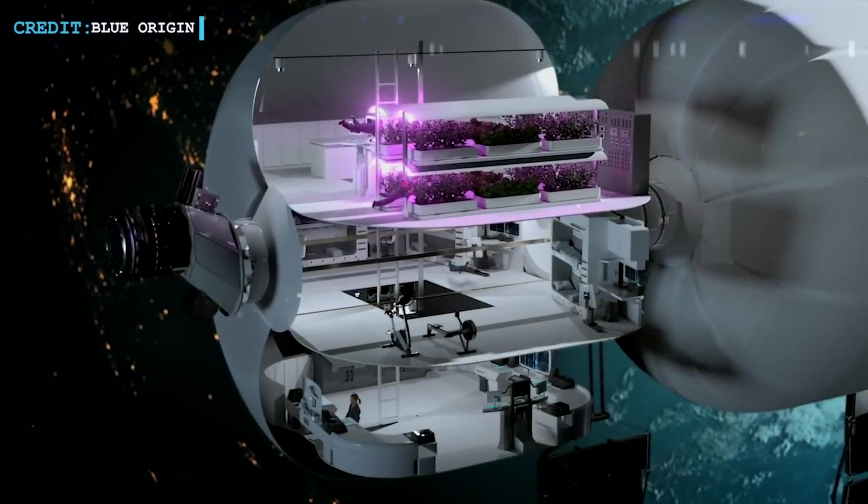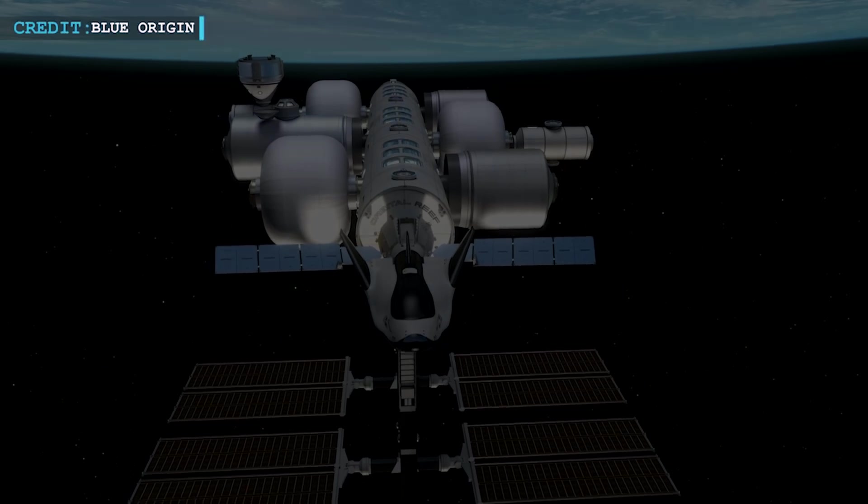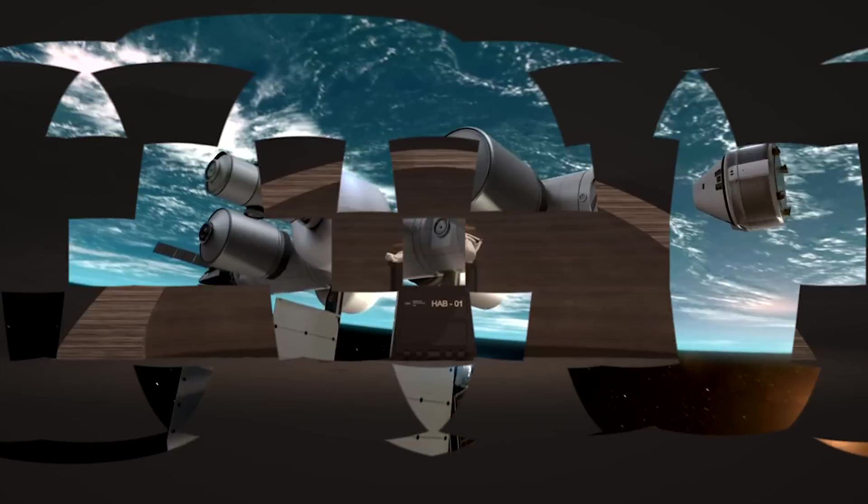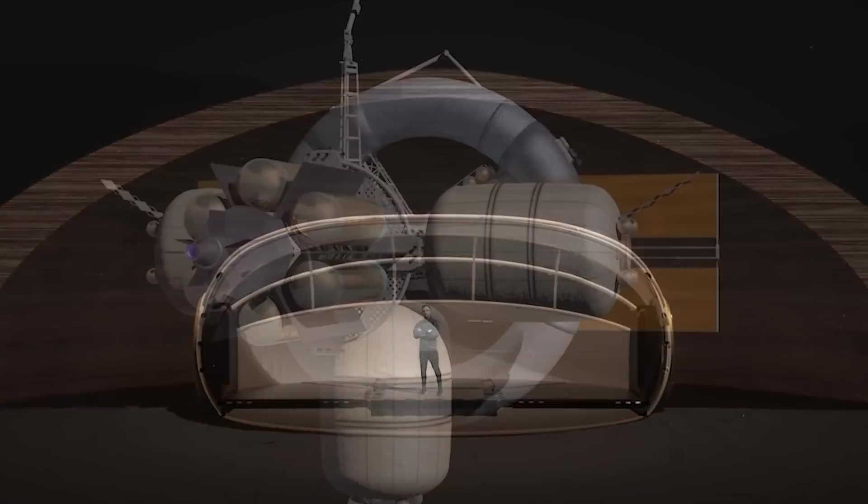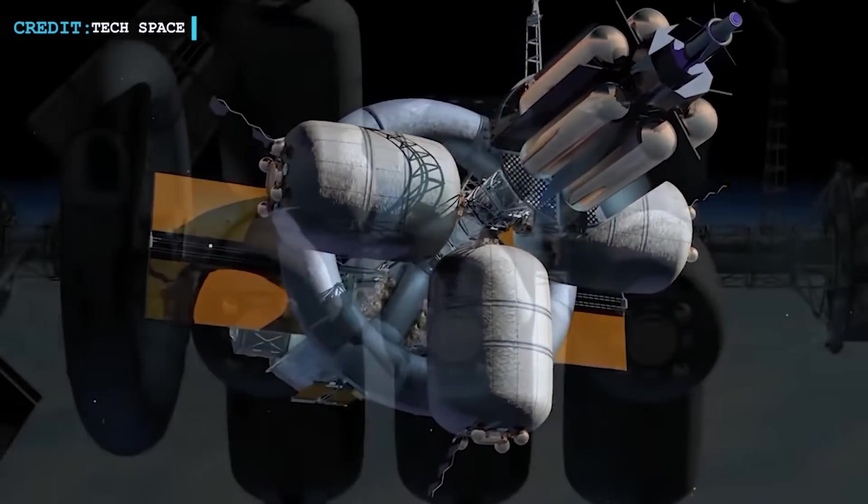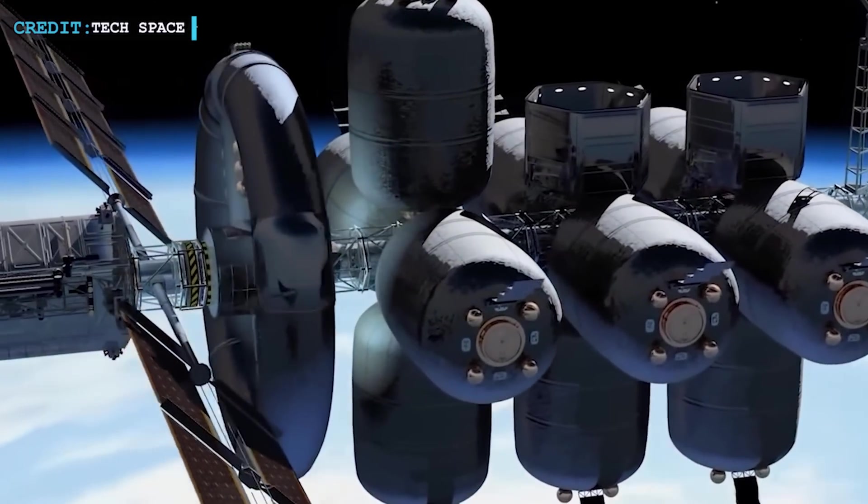Additionally, inflatable habitats can be tailored to accommodate different gravitational conditions. They can be designed for zero gravity, which is the natural state of space, or be equipped with the capability to provide artificial gravity. By rotating the habitat, the centrifugal force generated can simulate the effects of gravity, potentially offering numerous health benefits to the residents.